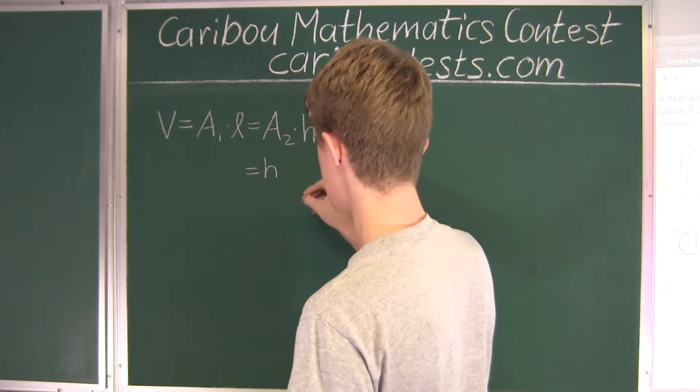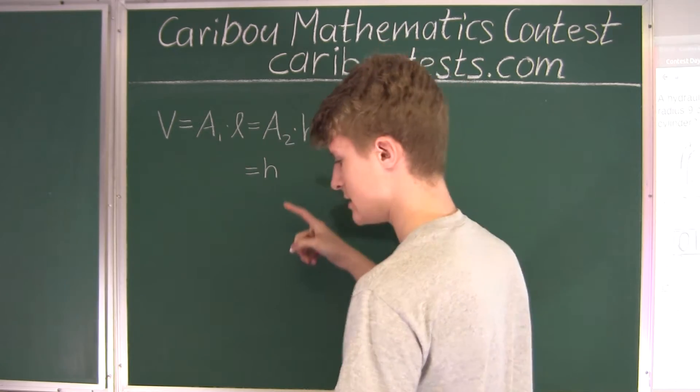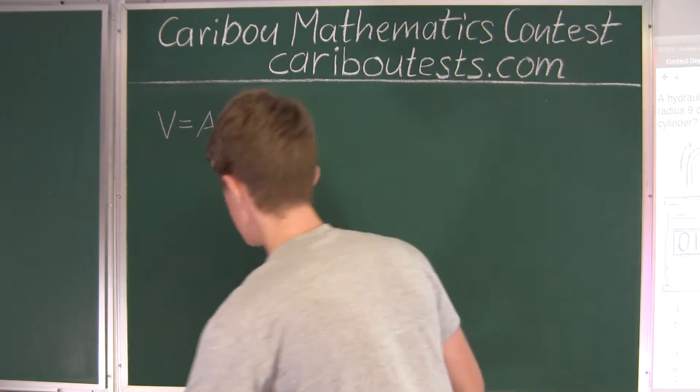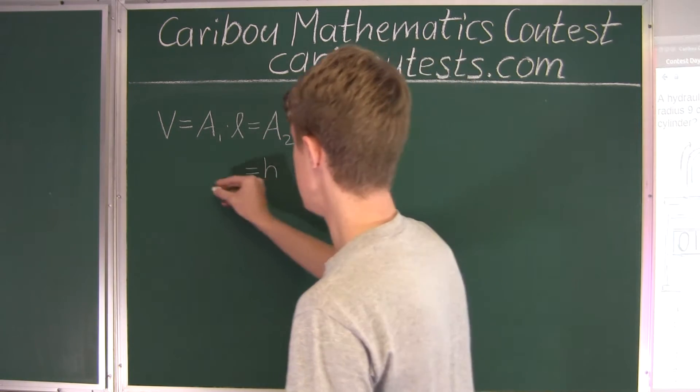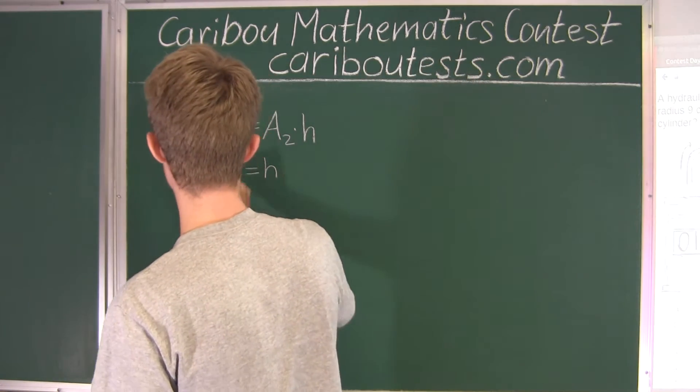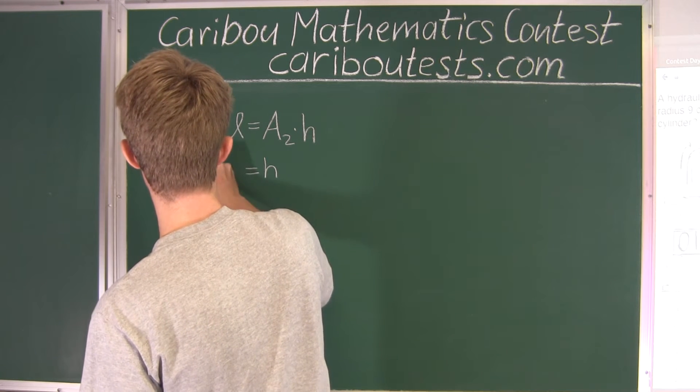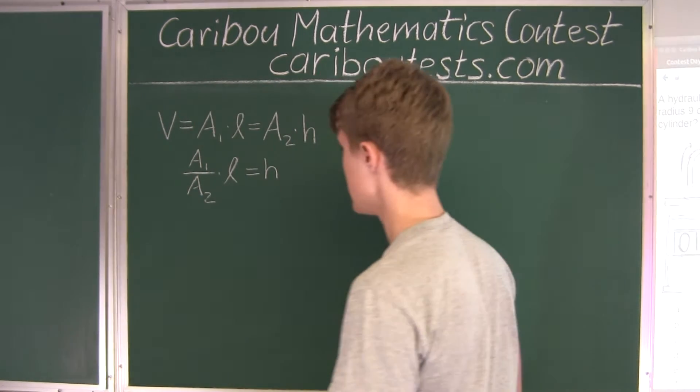So we will divide everything by A₂. So it's just H, and then on the left side, we have A₁ divided by A₂, and then multiplied by L.